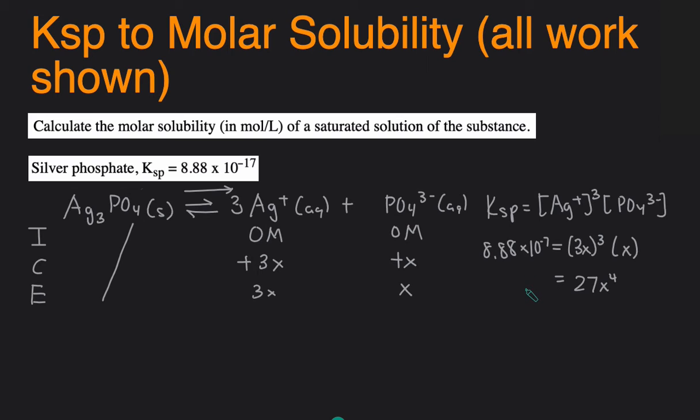Then to solve for X we take the Ksp 8.88 times 10 to the negative 17 divided by 27 and then raise it to the power 1/4 for taking the fourth root. And that will give us an X value equal to 4.26 times 10 to the negative 5.